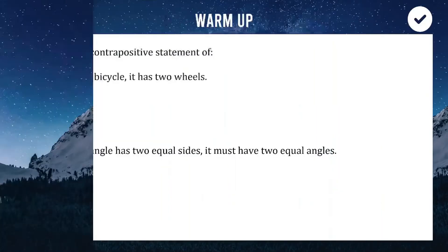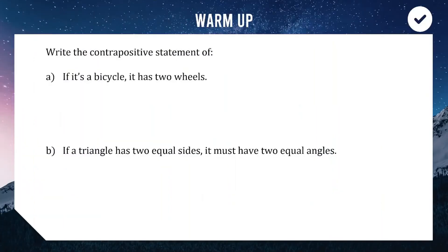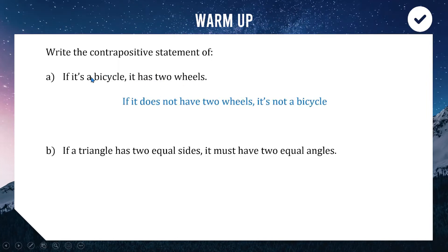Today's lesson is a quick one on proving things using a contrapositive. As a quick warm-up, we're going to find the contrapositive of some statements. For the first one: if it's a bicycle, it has two wheels. For the contrapositive, we take the negation of both parts and reverse the direction. The negation of having two wheels is not having two wheels; the negation of being a bicycle is not being a bicycle. So our contrapositive statement is: if it does not have two wheels, it is not a bicycle.